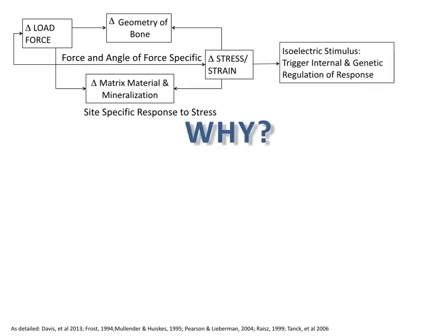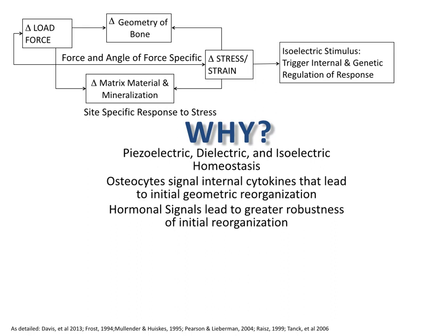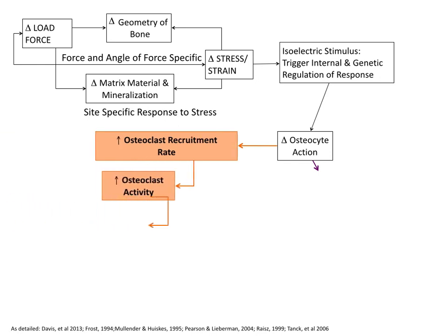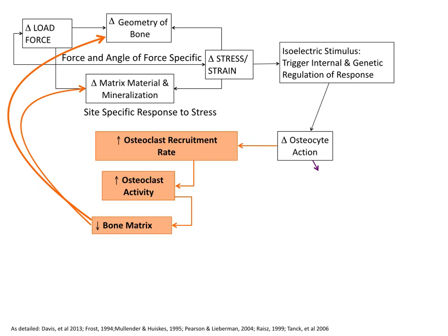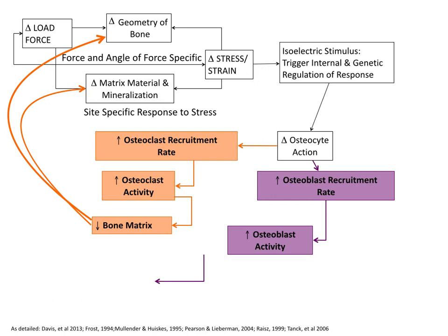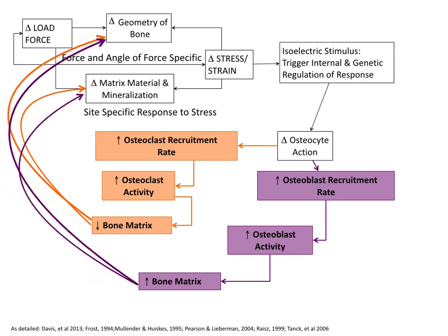Due to the change in isoelectric stimulus, we get a trigger. This trigger causes a systemic as well as an autocrine and paracrine hormone response. The autocrine-paracrine hormone response initiates a change in osteocyte activity. In areas of low load, we get an increase in osteoclastic recruitment causing an increase in osteoclastic activity and a diminishment of bone matrix in the area where load is not experienced. In the area where load is being experienced, we have an increase in osteoblastic activity, which causes an increase in the bone matrix.